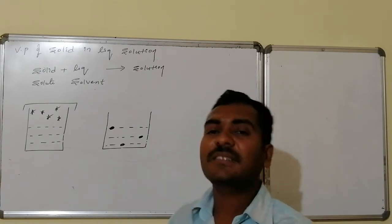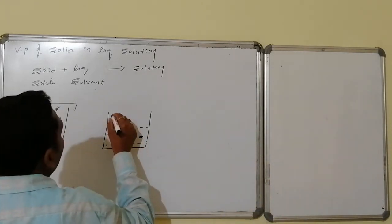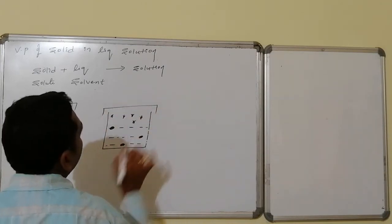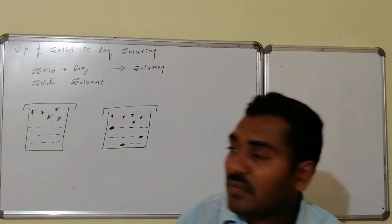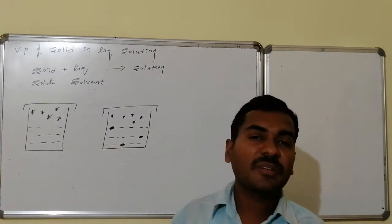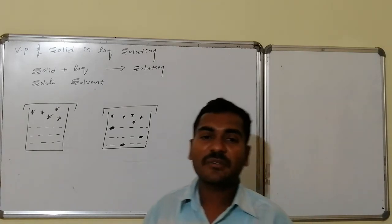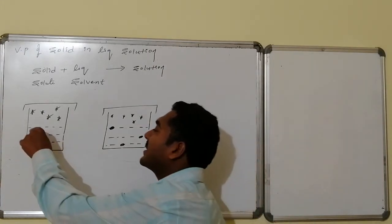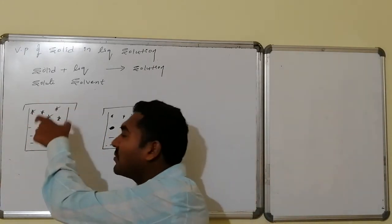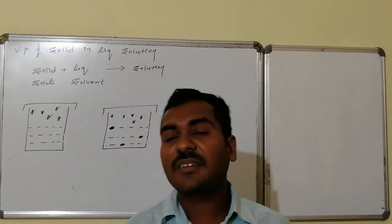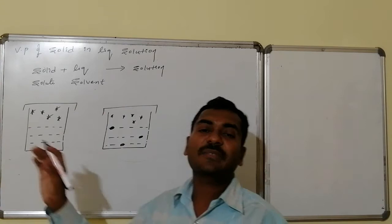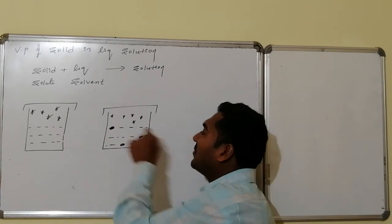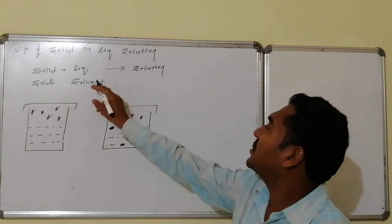Vaporization still occurs. Under normal conditions for pure solvent, five molecules would enter the vapor state from the upper surface — all five are eligible to vaporize. But in the solution, out of five upper surface molecules, one is a solute molecule, which is unfit for vaporization.